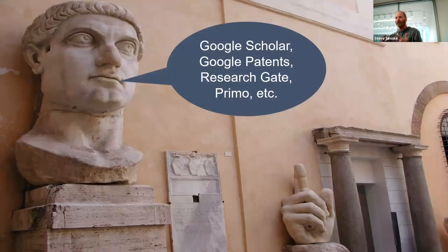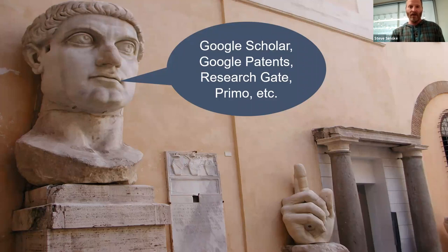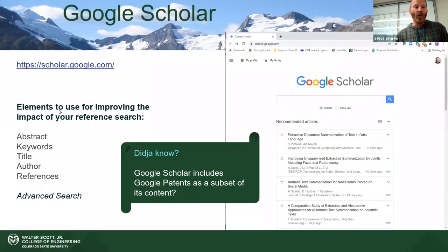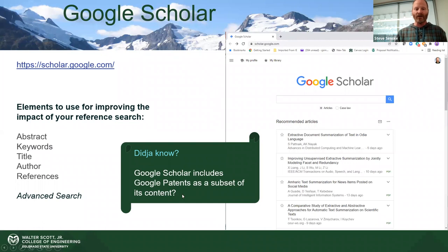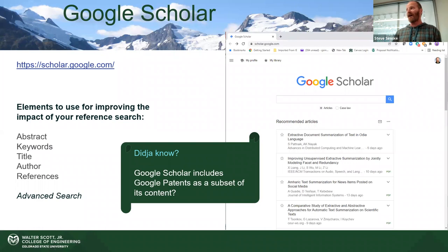Those give you a good idea of why you look for different types of references in each section. One of the ones you absolutely need to know about is Google Scholar. Google Scholar, for example, incorporates Google Patents — there's no reason you shouldn't be using those. You find patents in there too. Let's jump out to that now.